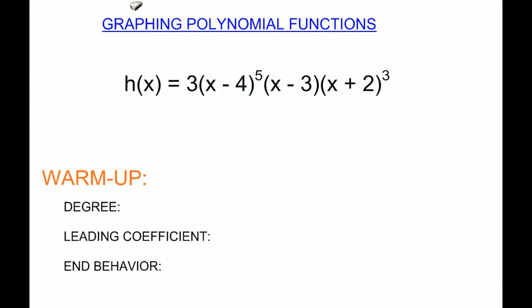So here we have another quick little warm-up. It's just in the factored form rather than the unfactored form. So h of x is equal to 3 times the quantity x minus 4 to the 5th times the quantity x minus 3 times the quantity x plus 2 to the 3rd. So what is our degree?